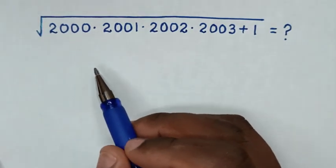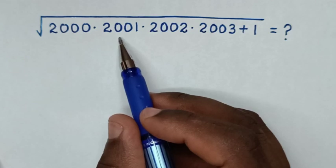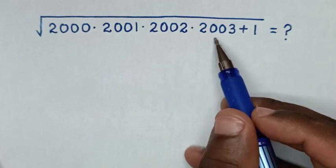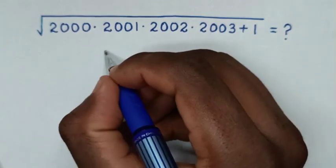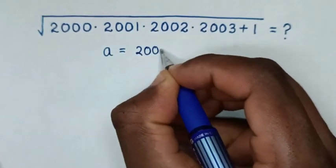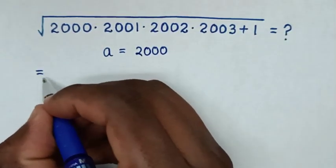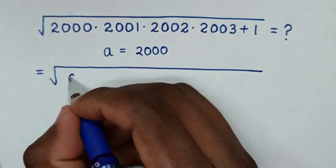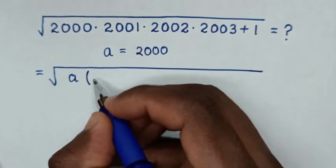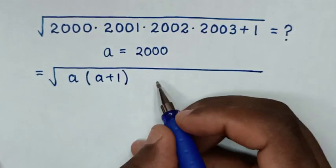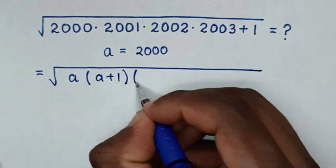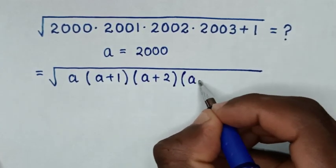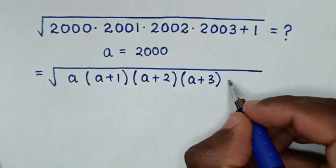From here, 2000 is common. 2001 is the same as 2000 plus 1, 2002 is the same as 2000 plus 2, and 2003 is the same as 2000 plus 3. So we let a equal to 2000. Then it will be equal to square root of a times (a plus 1) times (a plus 2) times (a plus 3), then plus 1.